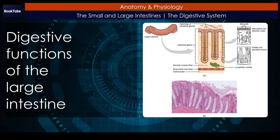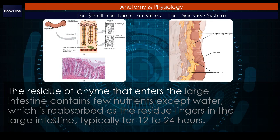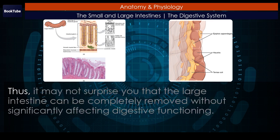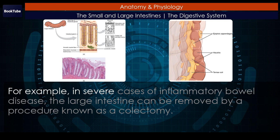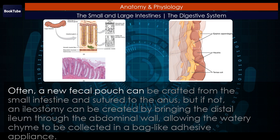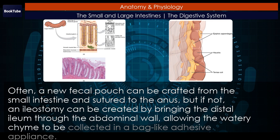Digestive functions of the large intestine. The residue of chyme that enters the large intestine contains few nutrients except water, which is reabsorbed as the residue lingers in the large intestine, typically for 12 to 24 hours. Thus, the large intestine can be completely removed without significantly affecting digestive functioning. In severe cases of inflammatory bowel disease, the large intestine can be removed by a procedure known as a colectomy. Often, a new fecal pouch can be crafted from the small intestine and sutured to the anus, but if not, an ileostomy can be created by bringing the distal ileum through the abdominal wall, allowing the watery chyme to be collected in a bag-like adhesive appliance.